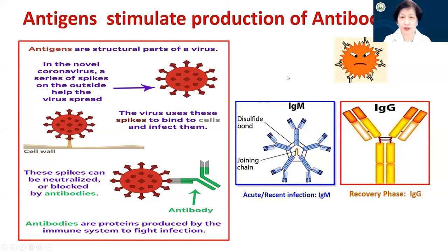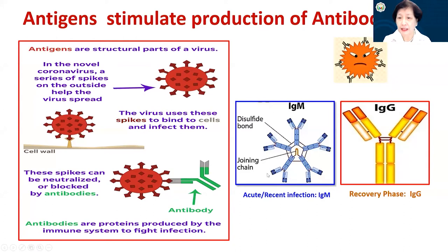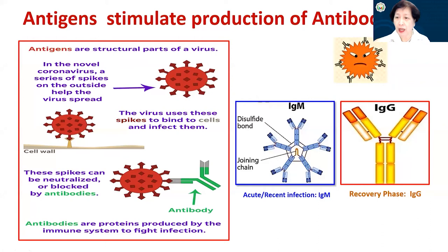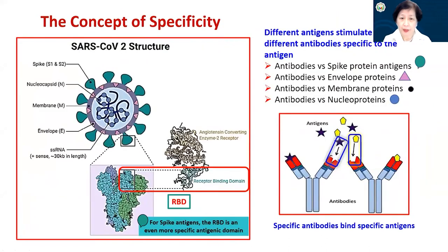Antigens would usually stimulate the production of antibodies. The virus, when it infects individuals, may elicit the formation of antibodies to very specific components of the virus — in this case, an antibody against the spike protein. In the context of clinical testing, we would be looking at IgM antibodies, which usually denote acute or recent infection, and IgG antibodies, which are usually associated with the recovery or convalescent phase.